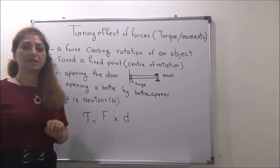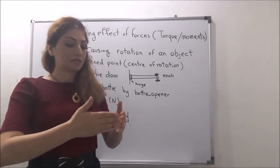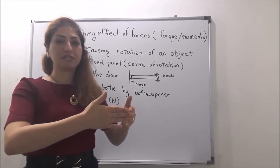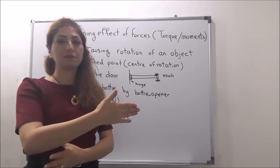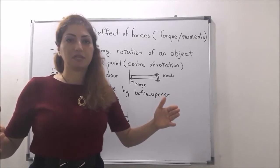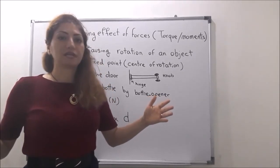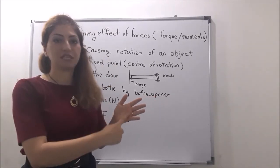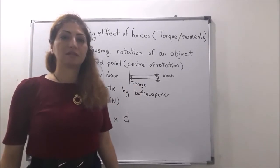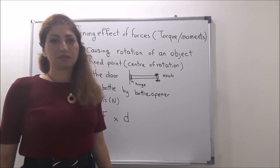Examples include when you open a door. The door is fixed at one point by a hinge to the wall, and on the other side there are knobs attached to the door far away from the hinge. When you open and close the door, it rotates around the fixed point which is the hinge. Another example is when you want to open a bottle using a bottle opener.